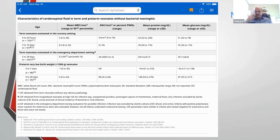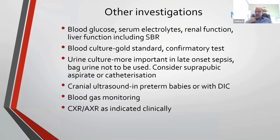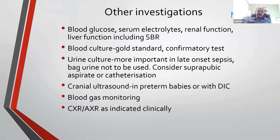A repeat lumbar puncture is not routinely needed. If the baby is clinically responding, treat according to the recommended duration. If CSF is negative and blood culture is negative, go by the inflammatory marker response and clinical response for duration of treatment. We also do routine tests like blood glucose, serum electrolytes, renal and liver function. Remember that conjugated jaundice can result from many gram-negative septicemias and can persist for some time, as can cholestasis with necrotizing enterocolitis.